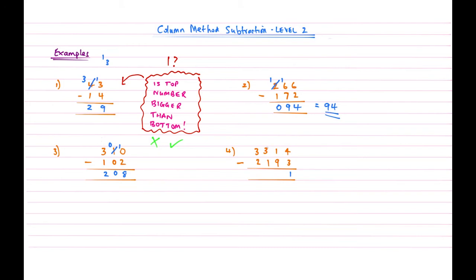So 3 reduces to a 2. And then the 1 that I've used to do that then gets placed next to this 1. So 11 take away 9 gives me an answer of 2. The hundreds column 2 take away 1 is 1. And then the thousands column 3 take away 2 is 1. So my answer to question 4 is 1,121.